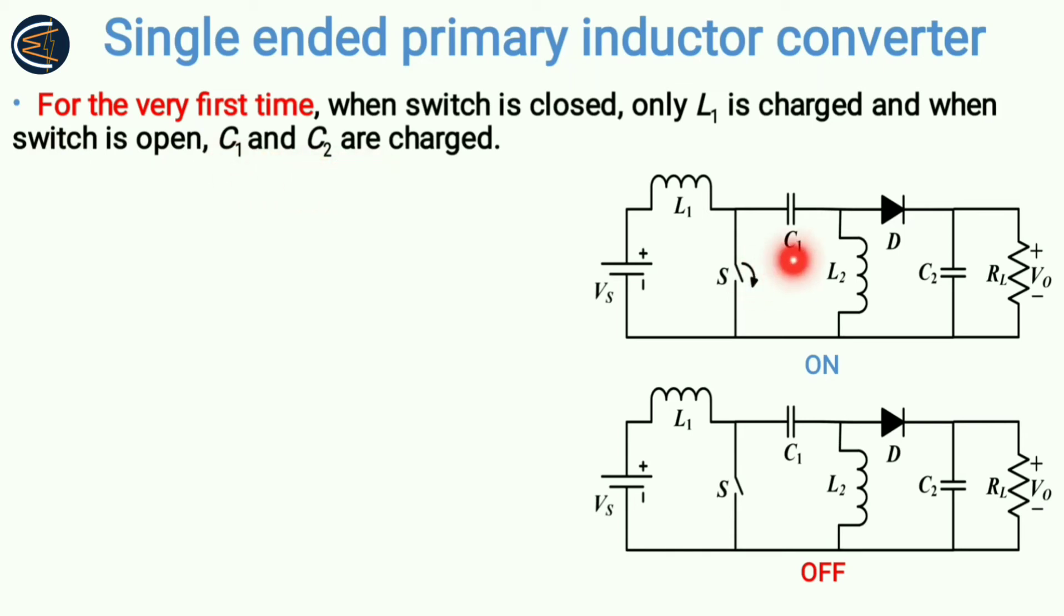See, the moment switch is open, what will happen? The charged inductor will now start discharging and it will maintain the current in same direction. By doing this process, both input supply and L1 will charge capacitor C1 and also capacitor C2. The power flow will take place like this for the very first time when the switch is open.